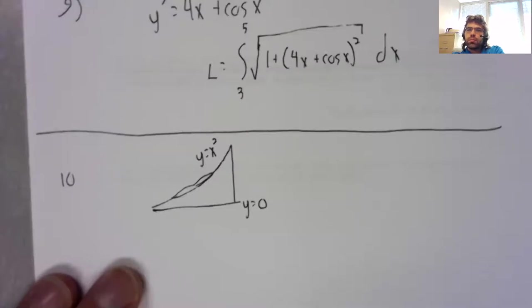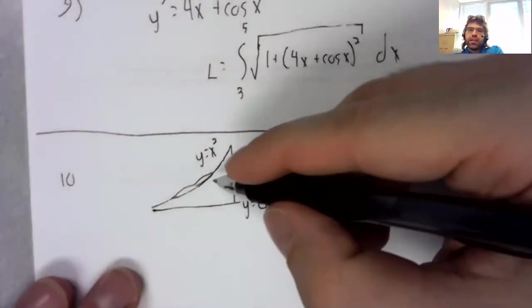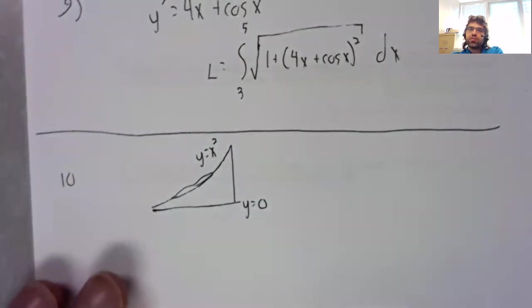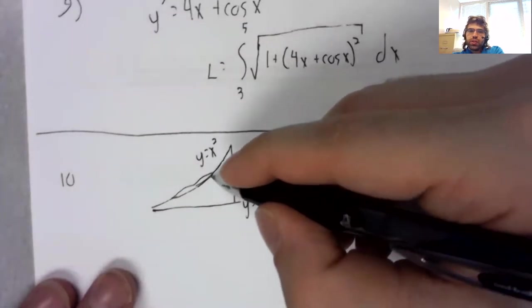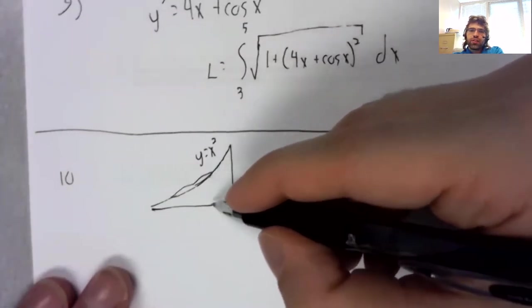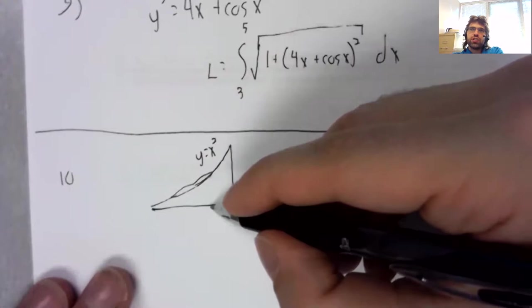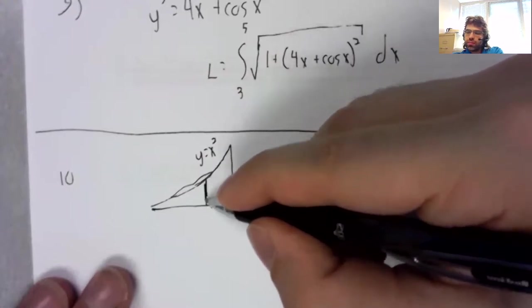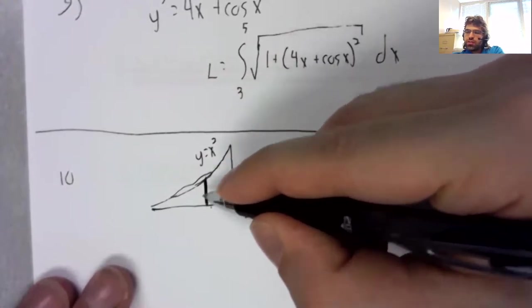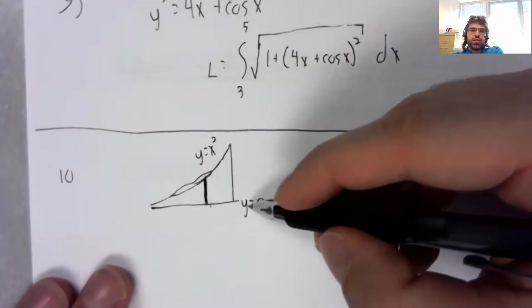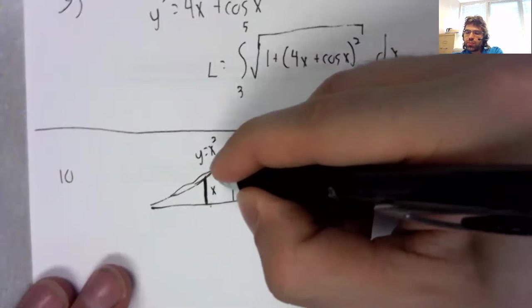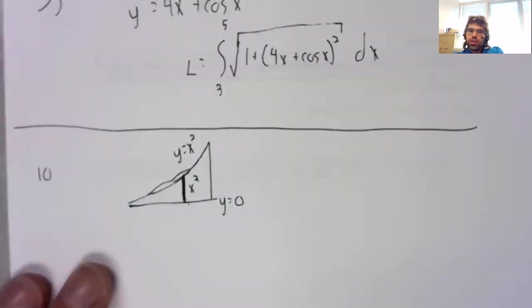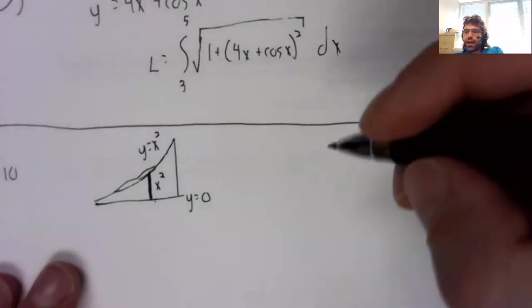Number 10. The radius that appears in the volume formula is the distance between the curve and the axis of rotation. Well, the distance between y equals zero and y equals x squared is x squared.